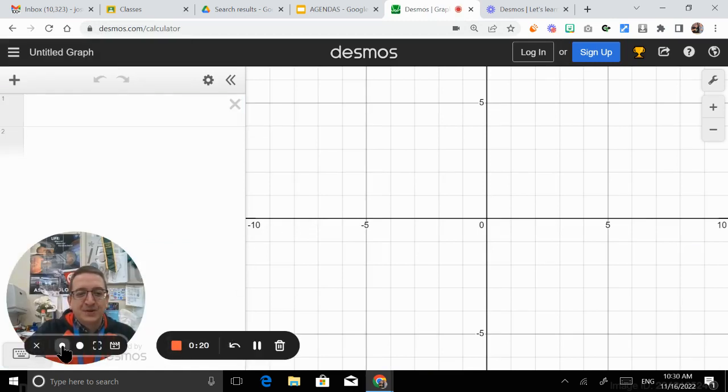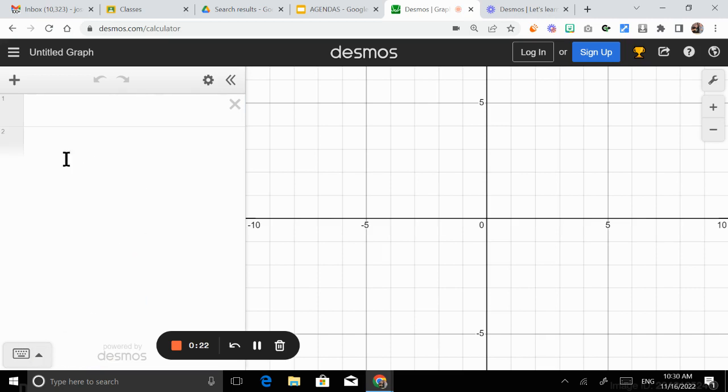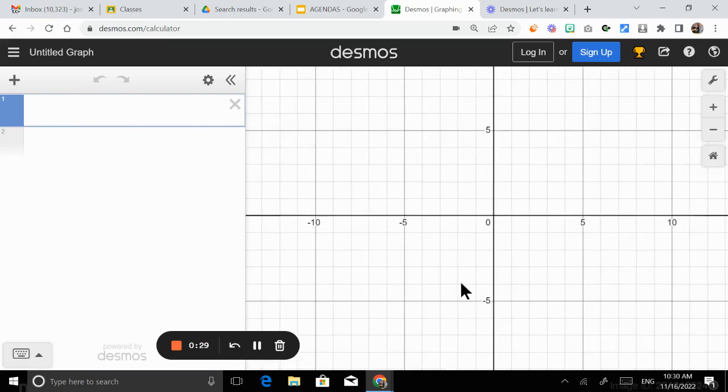And then we're going to start doing graphs right away. Let me show you. First, we can put right here any function that we're going to be graphing in this area, or you can click on the add item and select expression and you have a different expression that you can do.